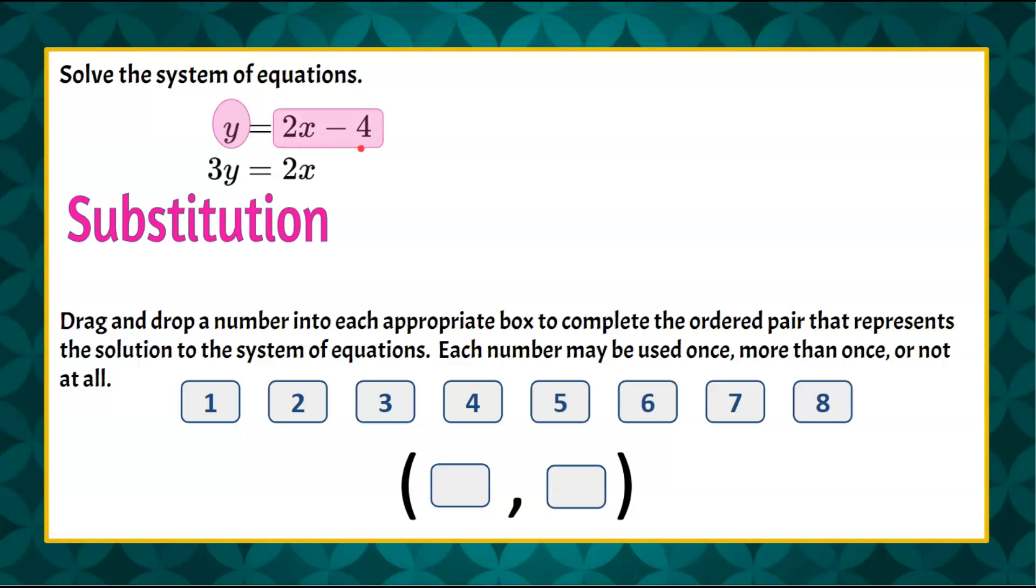So therefore we know that y is equal to 2x subtract 4, and now we can substitute this in for y in the second equation, and then we will only have one unknown variable, x, that we can solve for.